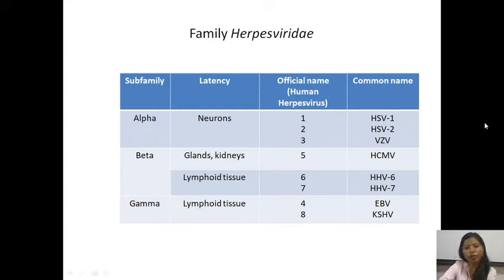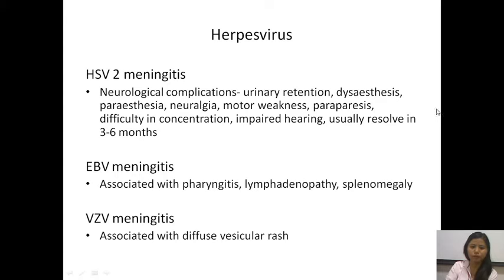Other common viruses involved in viral meningitis are herpes viruses, belonging to the family Herpesviridae, classified further as subfamilies alpha, beta, and gamma. It has eight viruses where HSV-1, HSV-2, and VZV are in the alpha subfamily. Of these, the most important is HSV-2, which is involved in causing meningitis. Remember that HSV-1 is the most common cause of sporadic encephalitis, while for meningitis the most common cause is HSV-2.